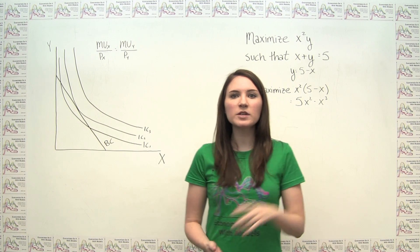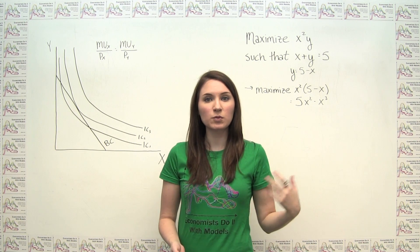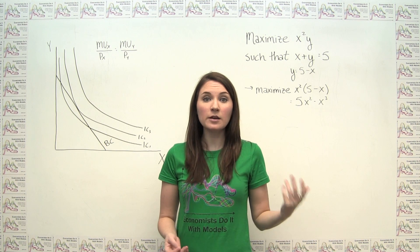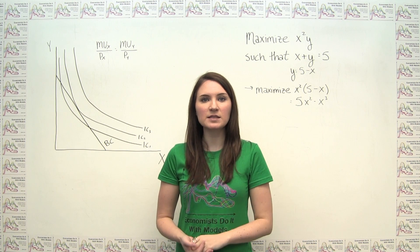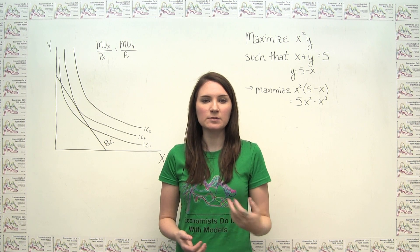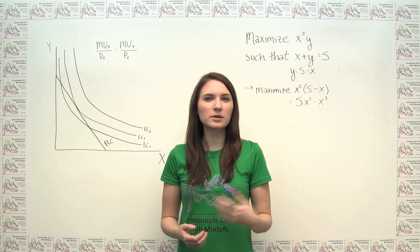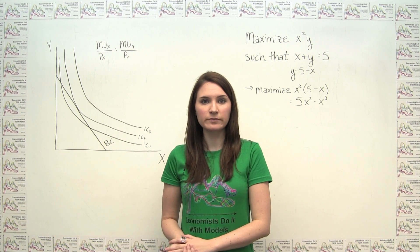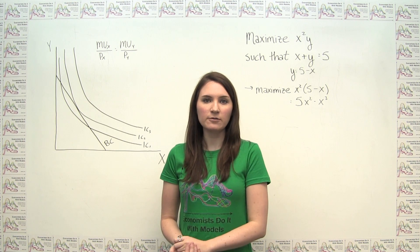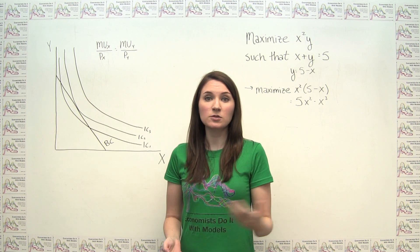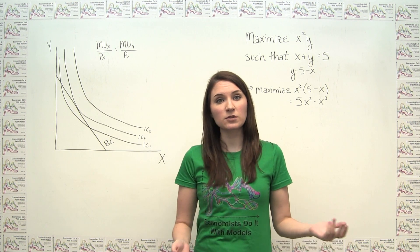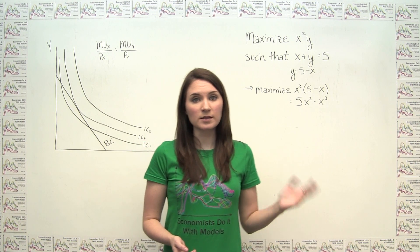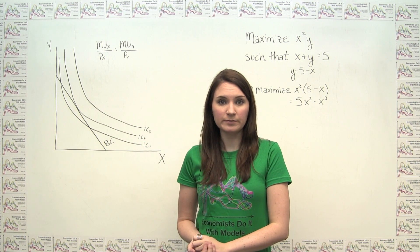In economics, it's pretty common to need to perform some sort of constrained optimization — to maximize or minimize some objective function subject to a constraint or a set of constraints. For example, economists often want to maximize utility subject to a budget constraint, or minimize production costs subject to a quantity constraint.